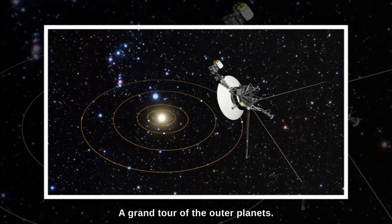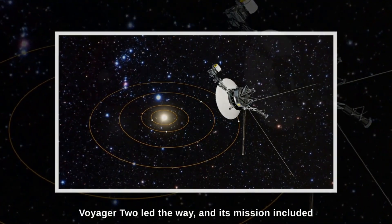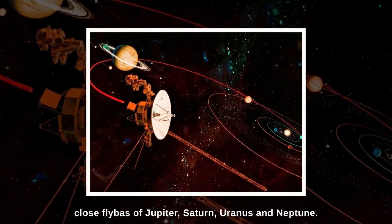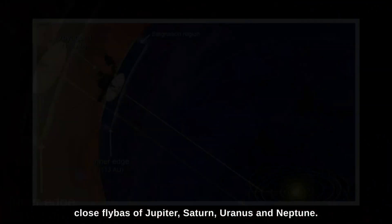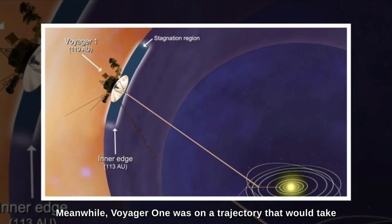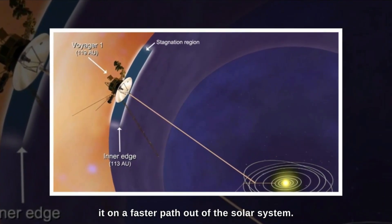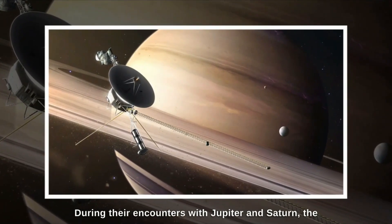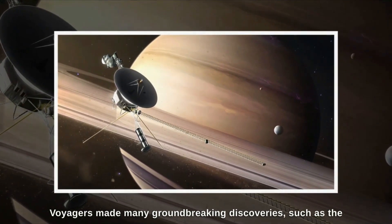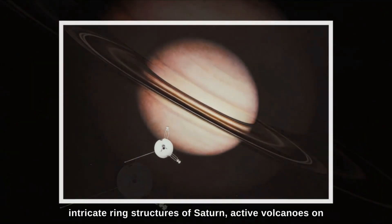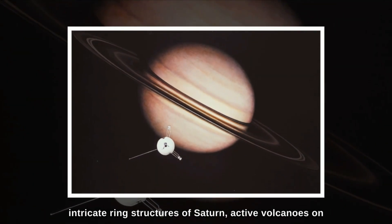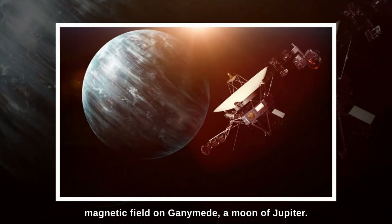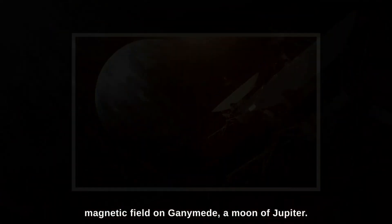Voyager 2 led the way, and its mission included close flybys of Jupiter, Saturn, Uranus, and Neptune. Meanwhile, Voyager 1 was on a trajectory that would take it on a faster path out of the solar system. During their encounters with Jupiter and Saturn, the Voyagers made many groundbreaking discoveries, such as the intricate ring structures of Saturn, active volcanoes on Jupiter's moon Io, and the presence of a magnetic field on Ganymede, a moon of Jupiter.